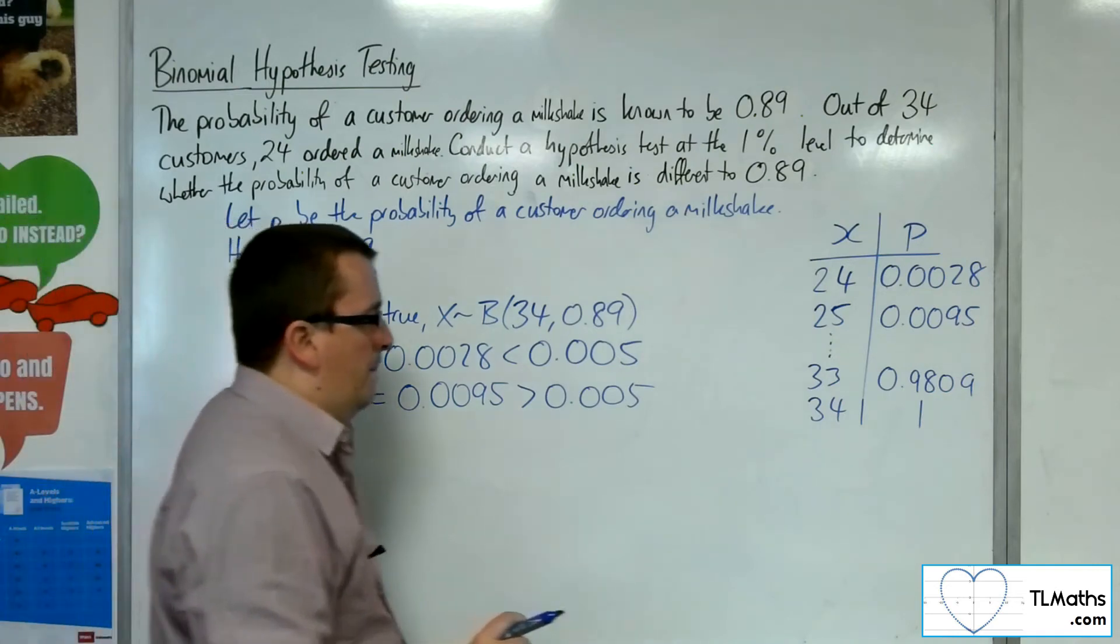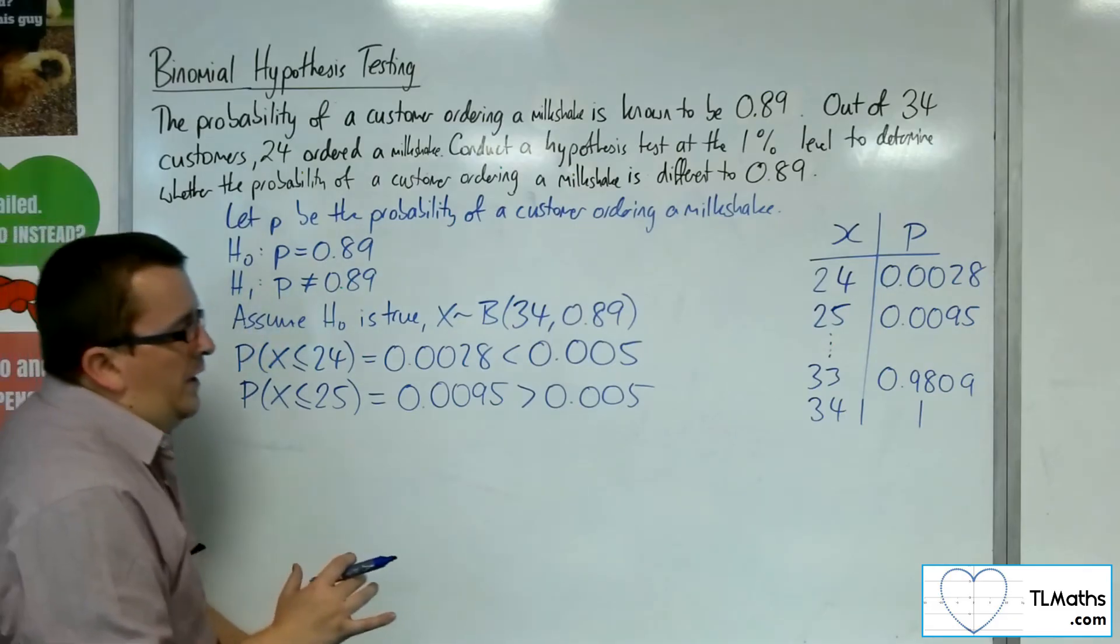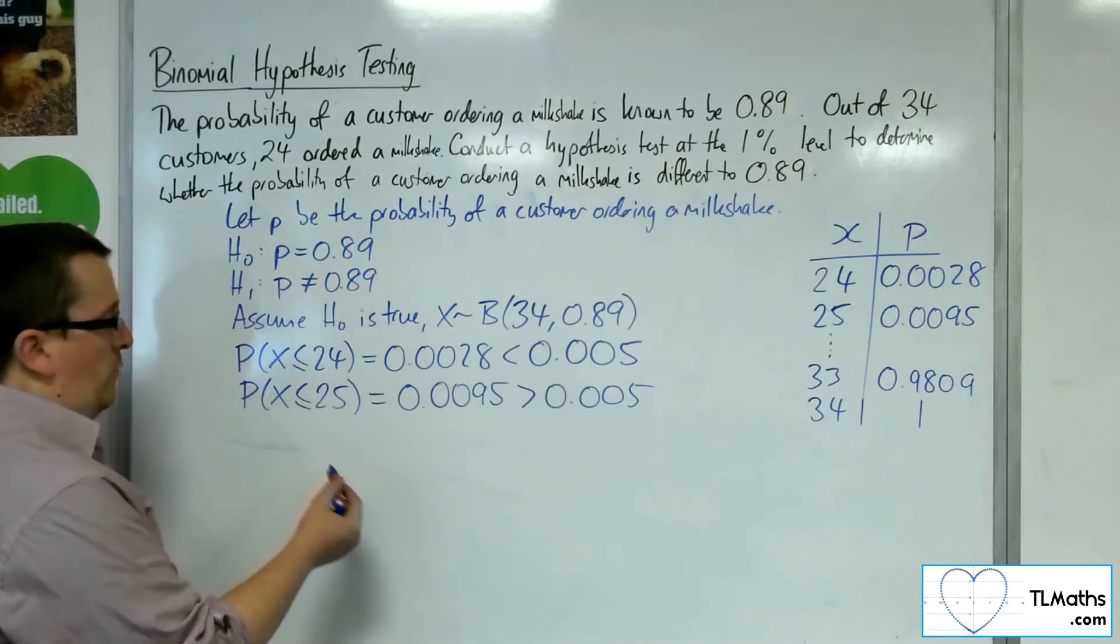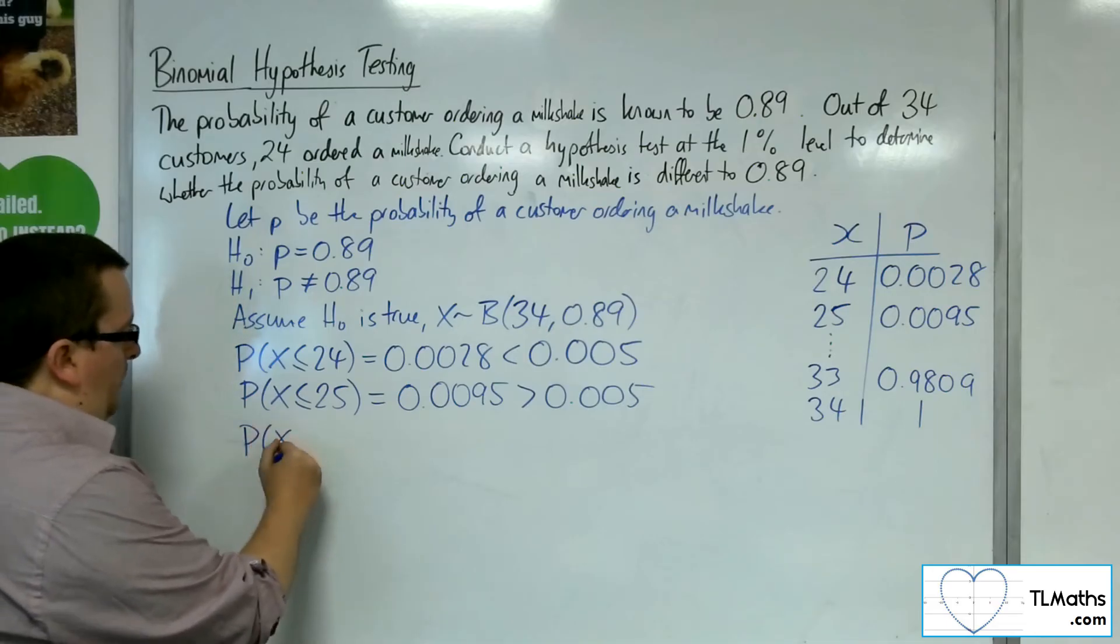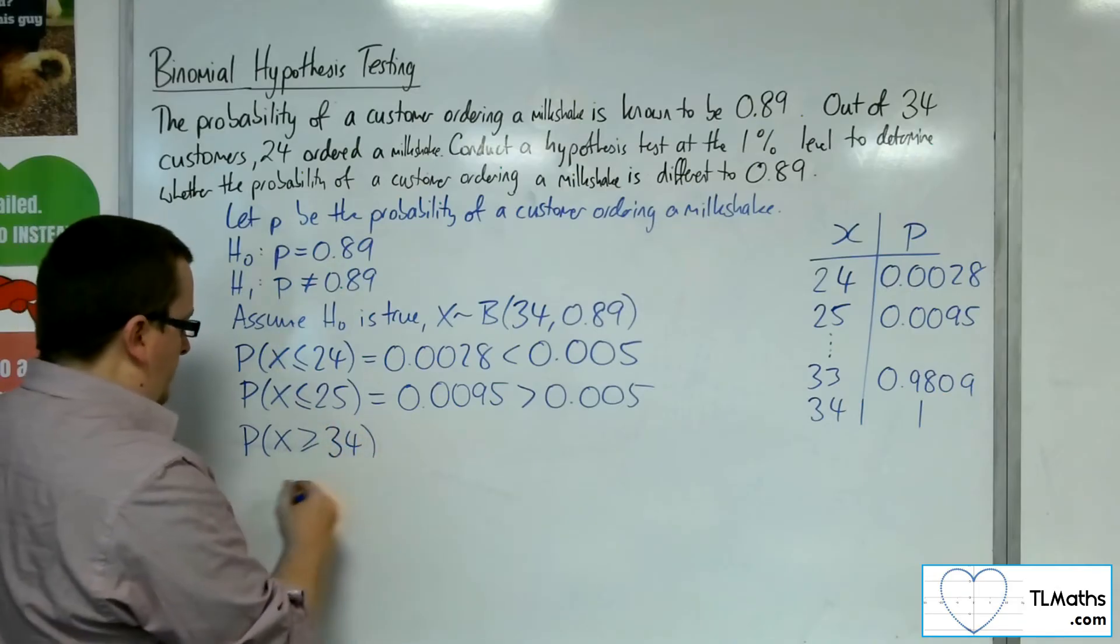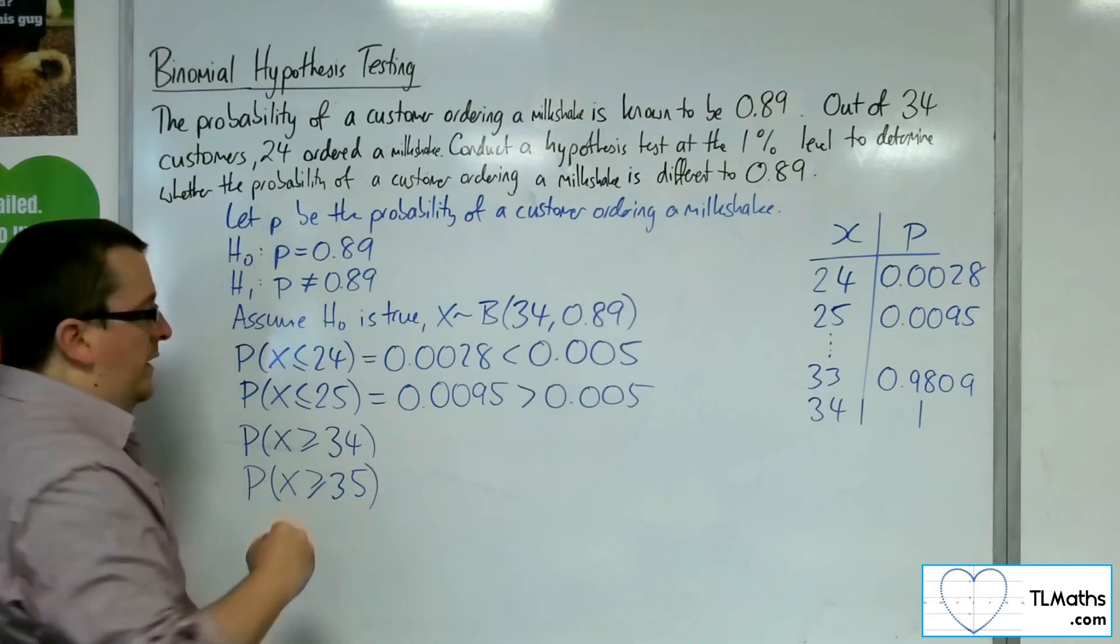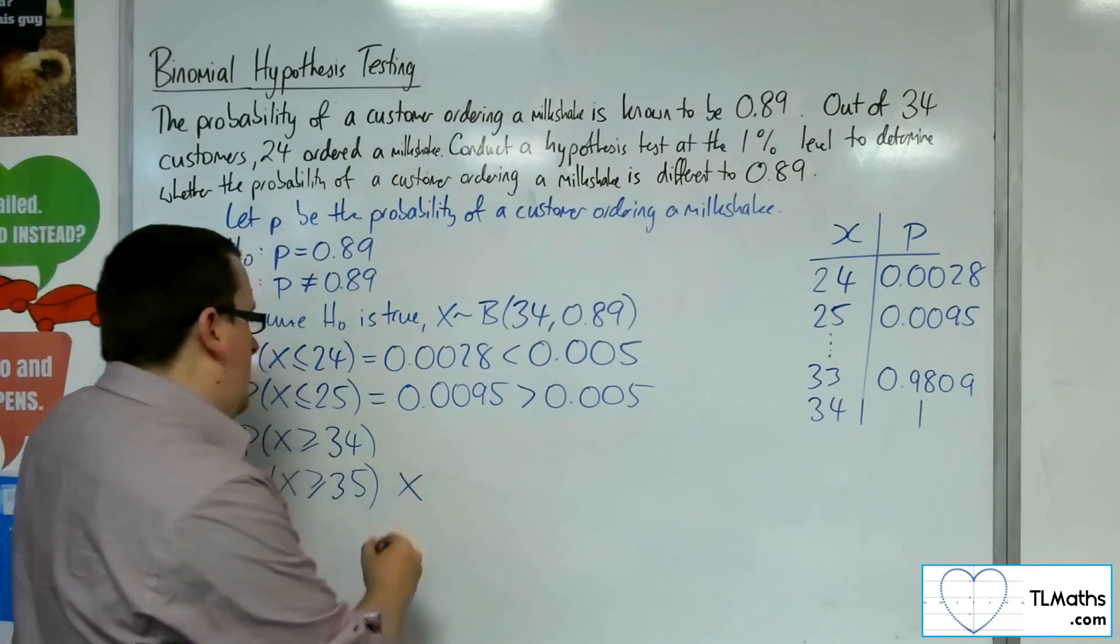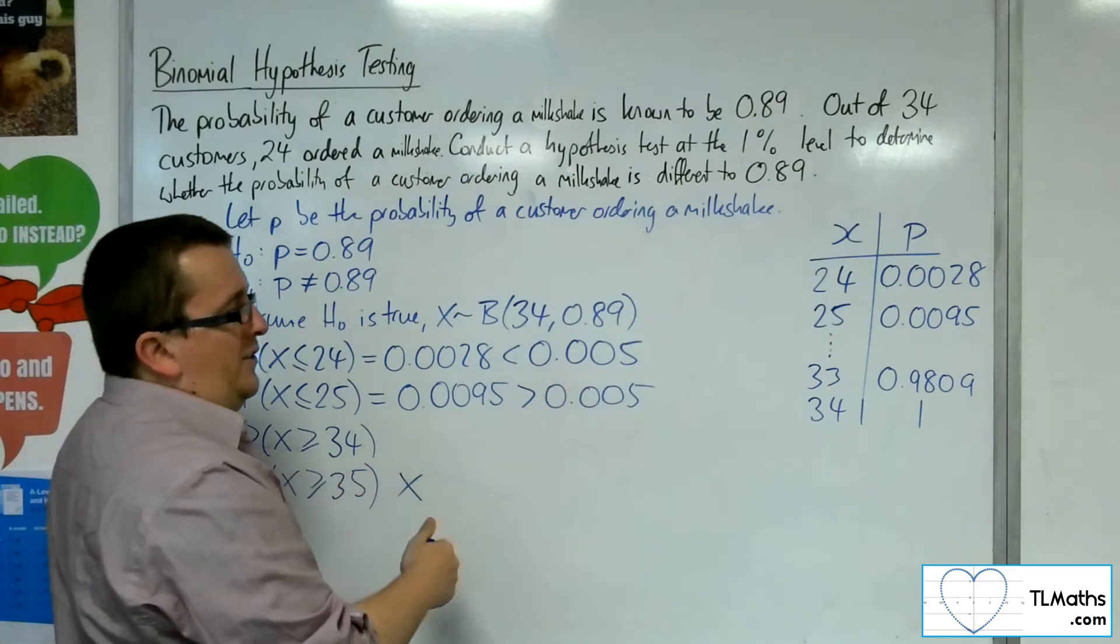At the top end, I know I've got this overlap here, the 33 and 34, but remember we've got to add one to both of those. So the probability of X being greater than or equal to 34, we can't really write greater than or equal to 35 because we can't get more than 34. So this doesn't really exist.